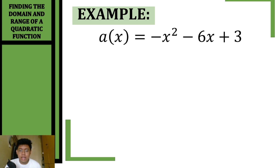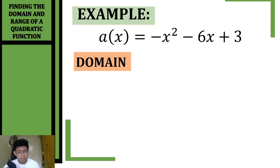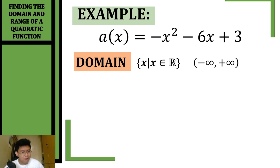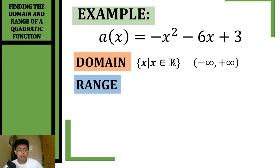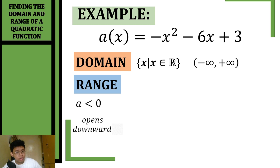For our second example, let's find the domain and the range of a(x) = −x² − 6x + 3. The domain is always any real number: x such that x is an element of any real number, or from negative infinity to positive infinity. For the range, our a = −1, which is less than zero, so the parabola opens downward. The value of y will be less than or equal to our maximum value k.